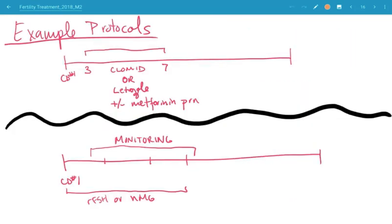Some example protocols, just to talk about how these drugs work and how we basically give them. Let's take Clomid or Letrozole plus or minus Metformin. For example, let's take a patient who's on Clomiphene. She has PCOS, she's 26 years old, has never been pregnant, has irregular periods, and is ready to try something.